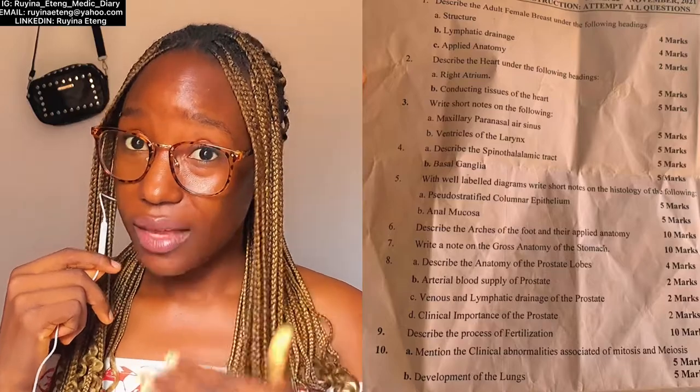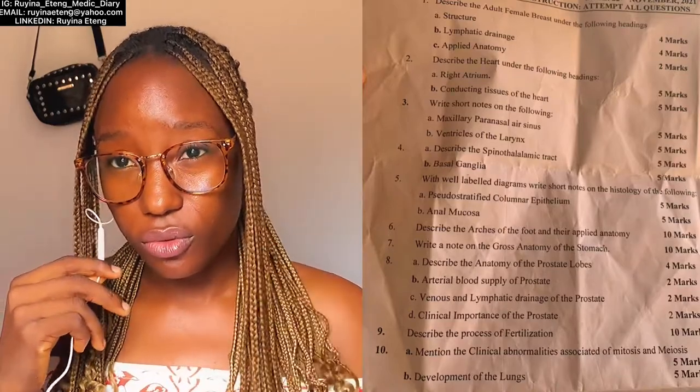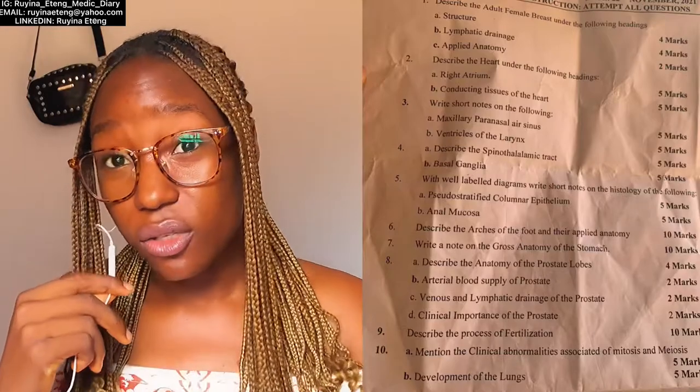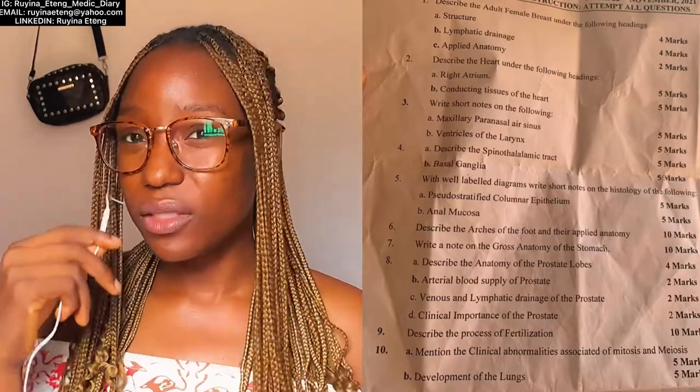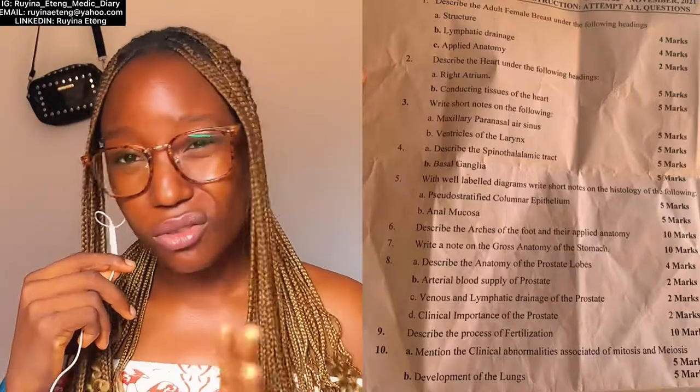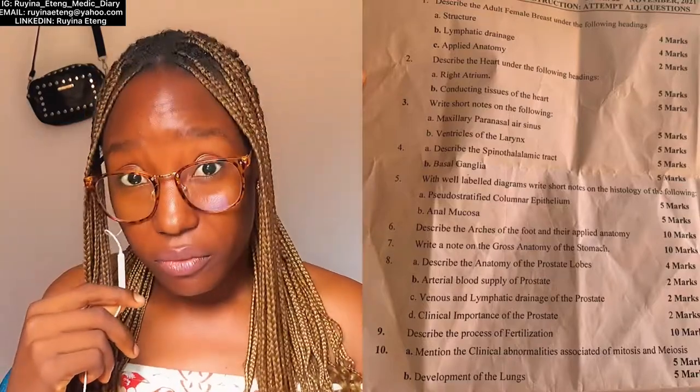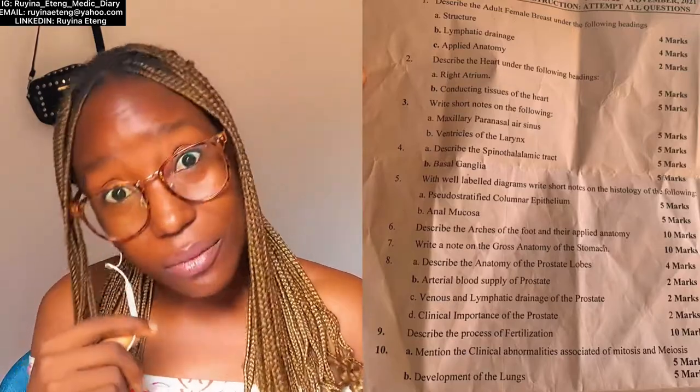Remember, each part should be described with one or two defining features. What makes it the fundus? What makes that part called cardiac? What defines the body? What makes this part the pylorus — remember the pylorus has a pyloric antrum. Note that the stomach is a continuation of the esophagus and continues into the duodenum. After the structural parts, write the blood supply, venous drainage, innervation, clinical anatomy, and lymphatic drainage — all with their respective diagrams.